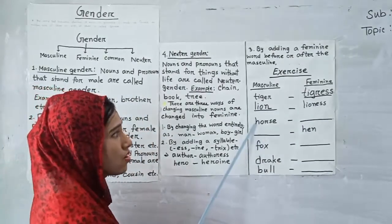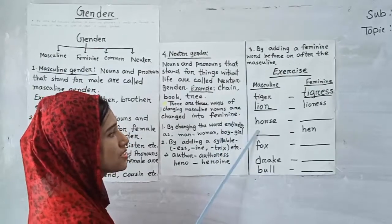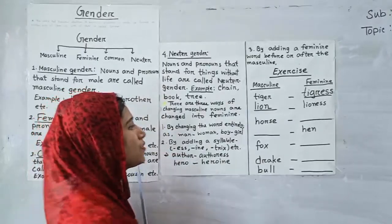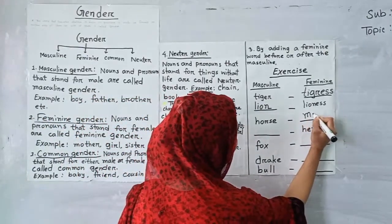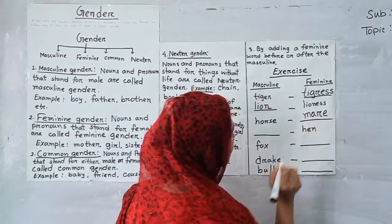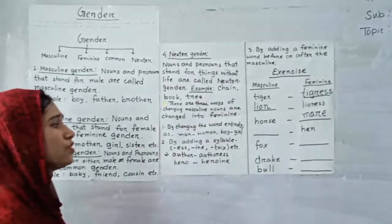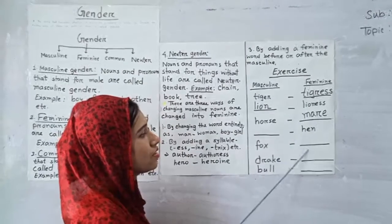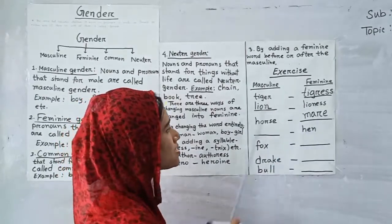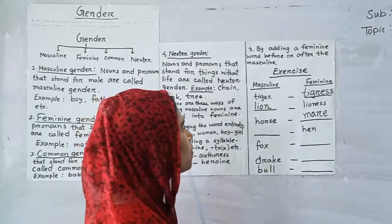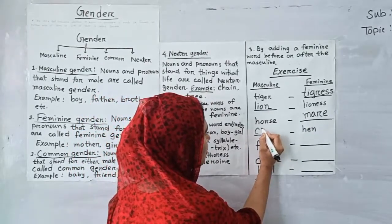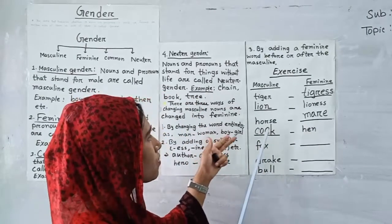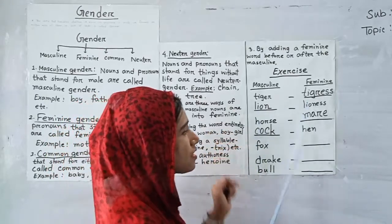Number 3, you can see the word horse — masculine gender. What is its feminine gender? Yes students, we can write here mare — M-A-R-E. Now, number 4, we can find the word hen. What is its masculine gender? Yes students, we can write here cock — C-O-C-K. So the word cock is masculine gender and its feminine gender is hen.